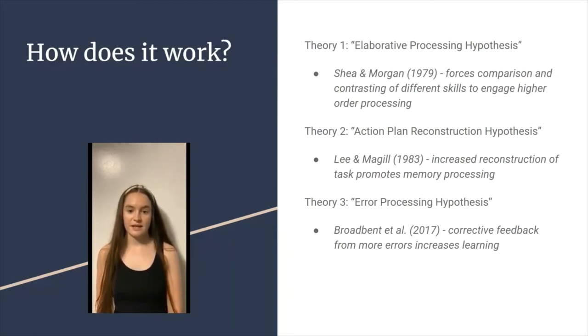The third hypothesis is the error processing hypothesis, which implies that the learning from random practice schedules can be due to the feedback that is given when a person fails on a skill trial. There has been support for all three hypotheses, which suggests that each could be contributing to the underlying cause for why contextual interference improves learning retention.